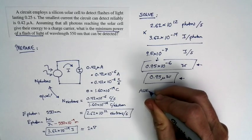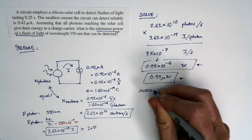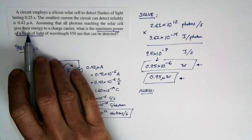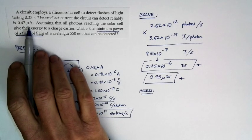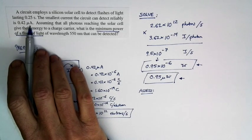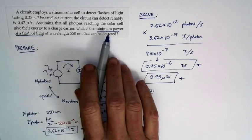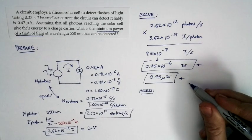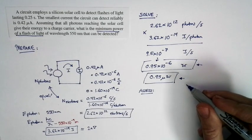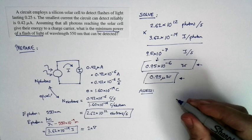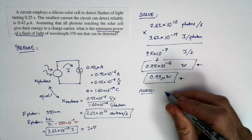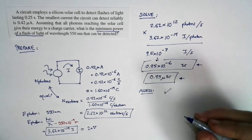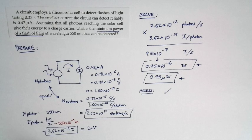Let's do a quick assessment to see if our answer makes sense. The 0.42 microamps is a very tiny current, so we expect the minimum power to be small as well. We end up with a power in microwatts — very tiny power indeed. Our assessment is that our answer makes sense in terms of how we know the world works.